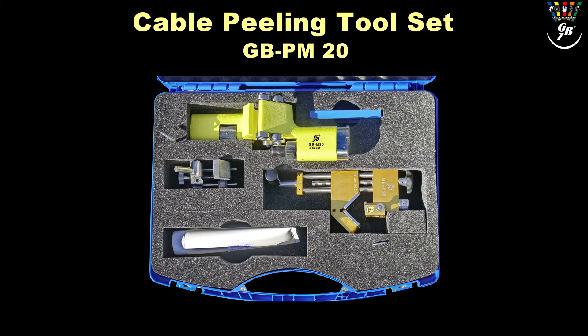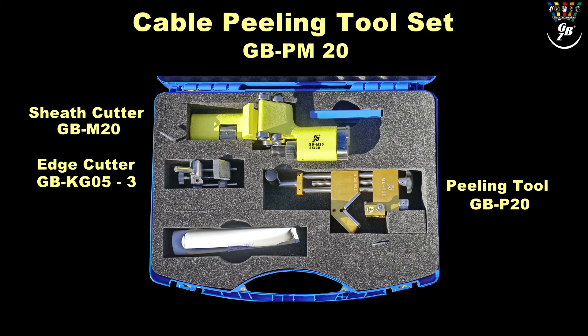The set includes the sheath cutter GBM20, the peeling tool GBP20, the edge cutter GBKG053, spare blades and a tube of silicon.